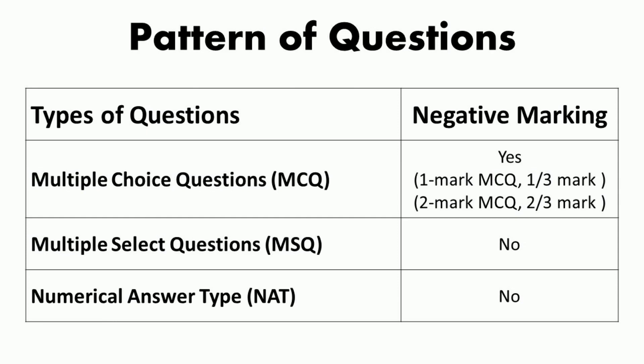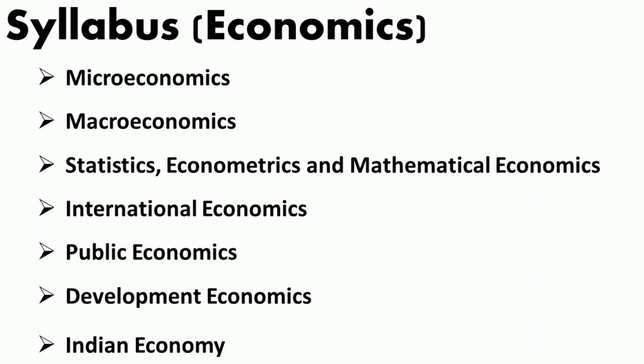That covers the pattern of the question paper for GATE Economics. The GATE Economics examination syllabus broadly includes seven areas: microeconomics, macroeconomics, statistics, econometrics and mathematical economics, international economics, public economics, development economics, and Indian economy. The detailed syllabus is attached in the description box below.